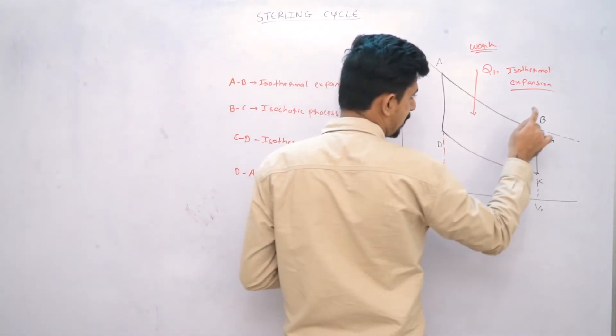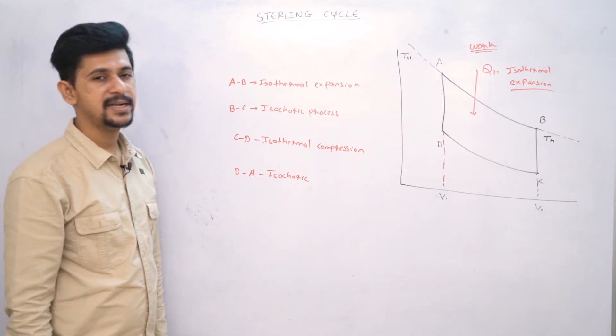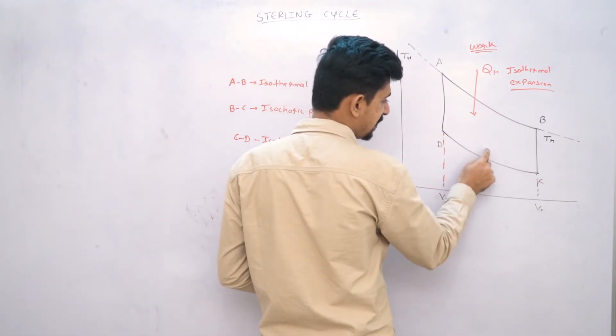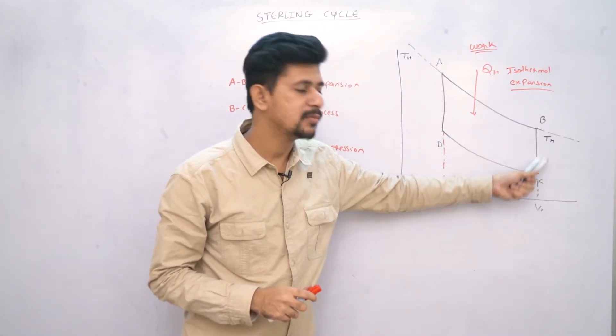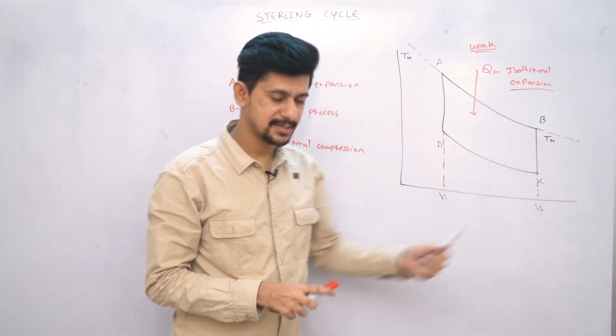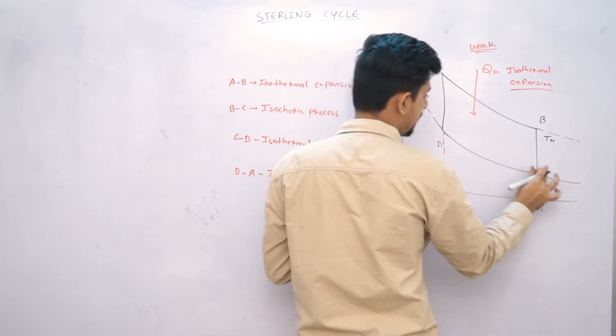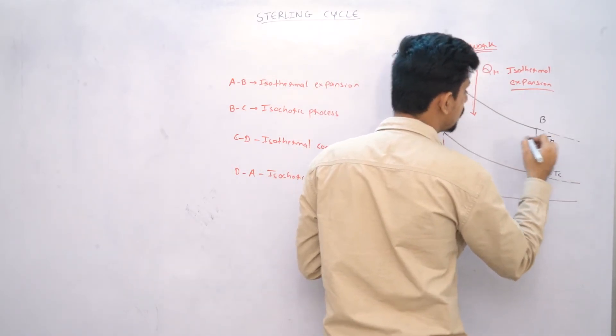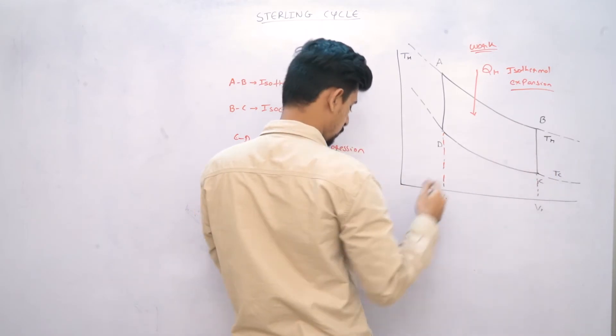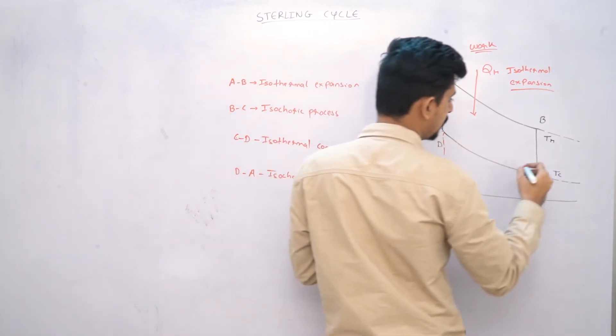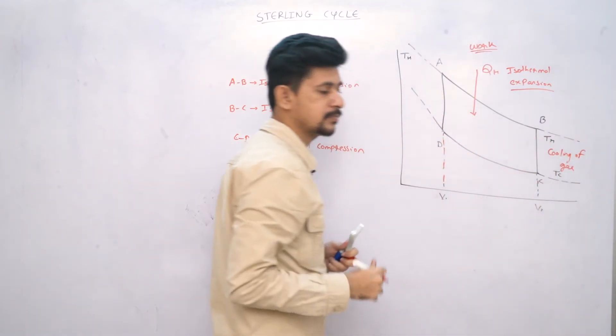Now, B to C. It is an isochoric process. Cooling of gas takes place.